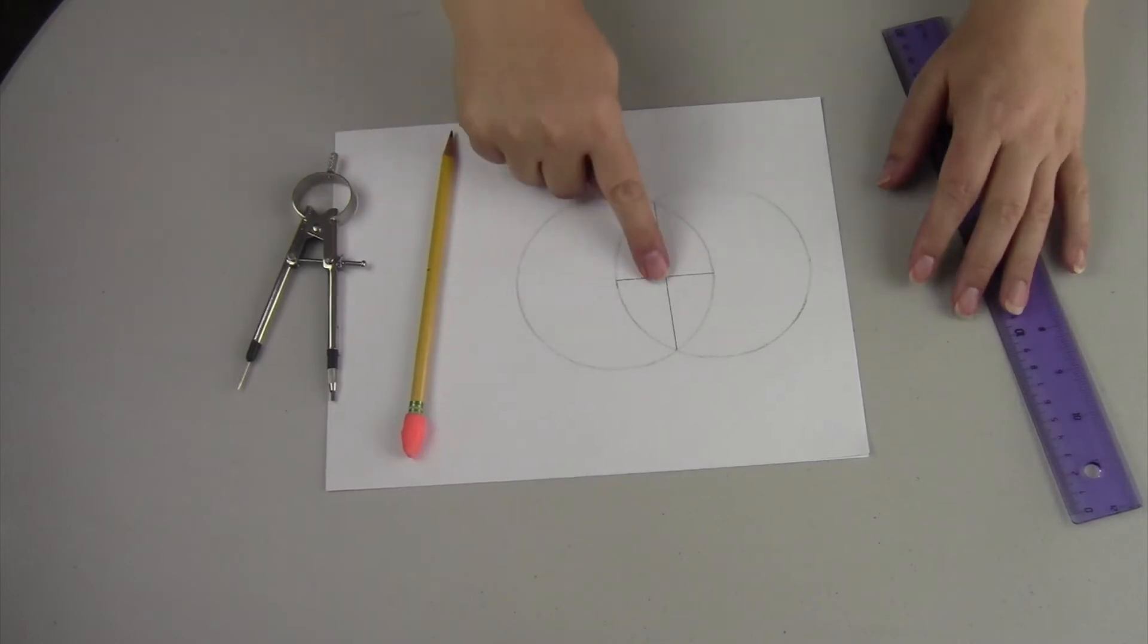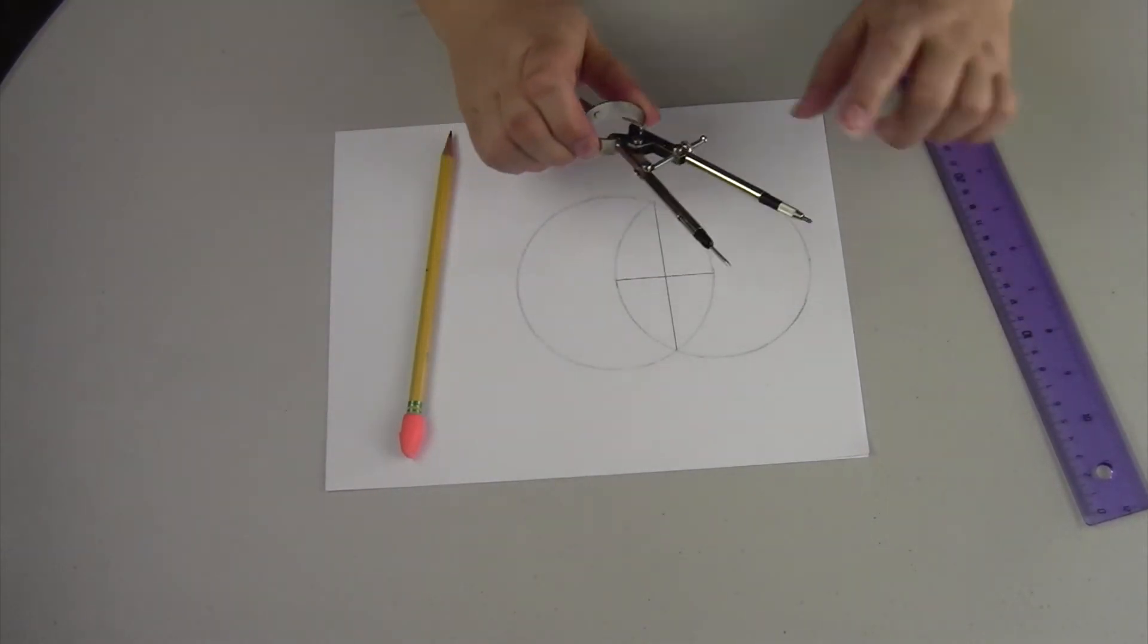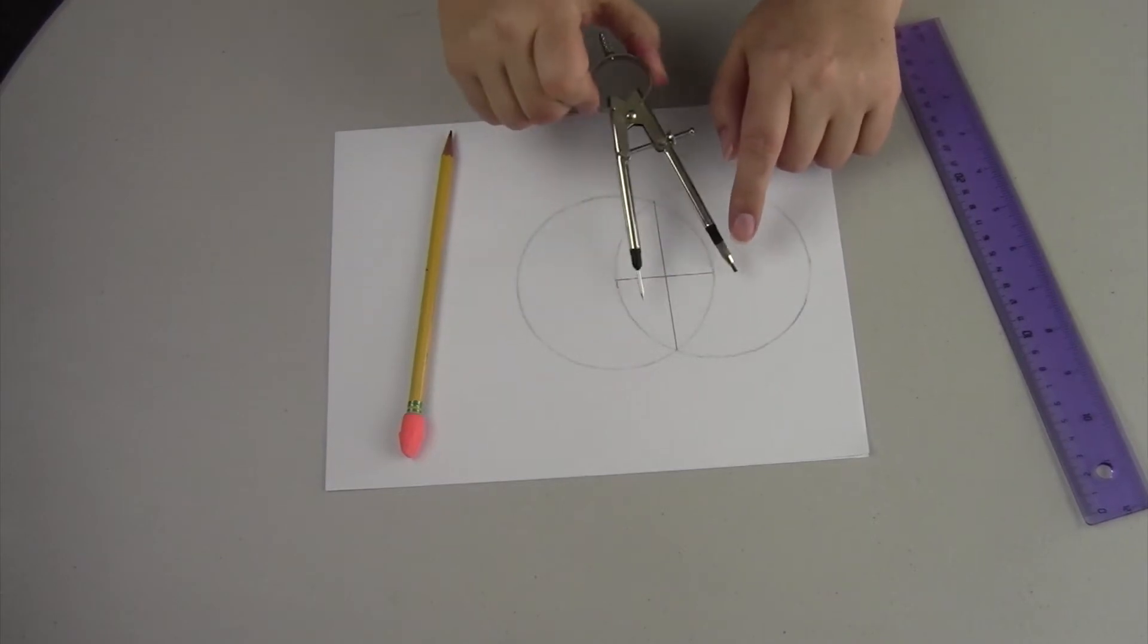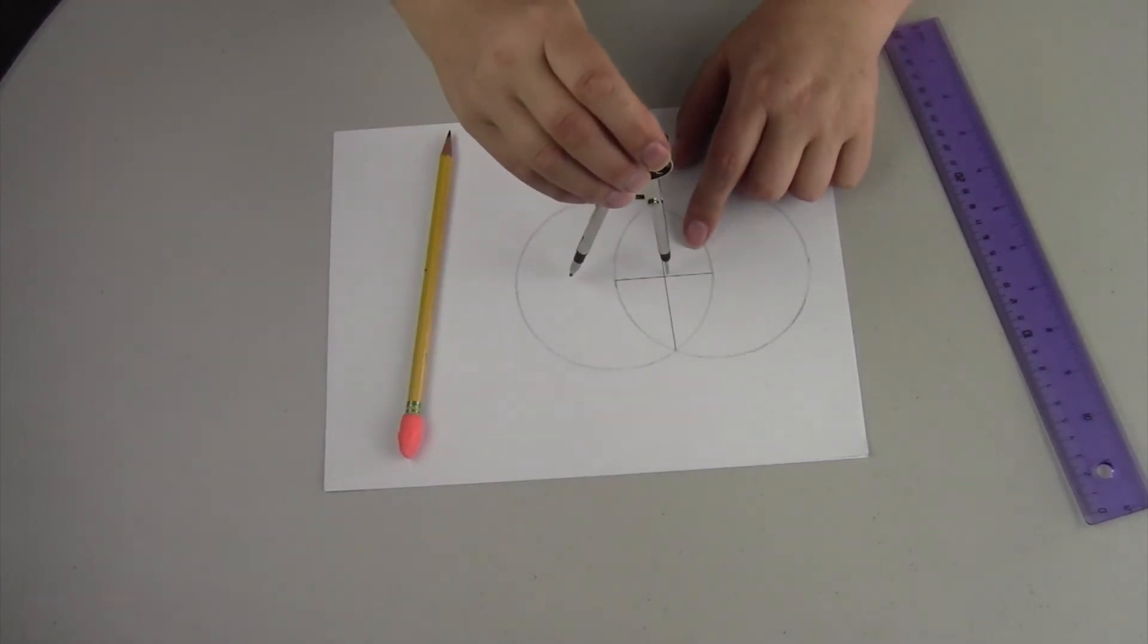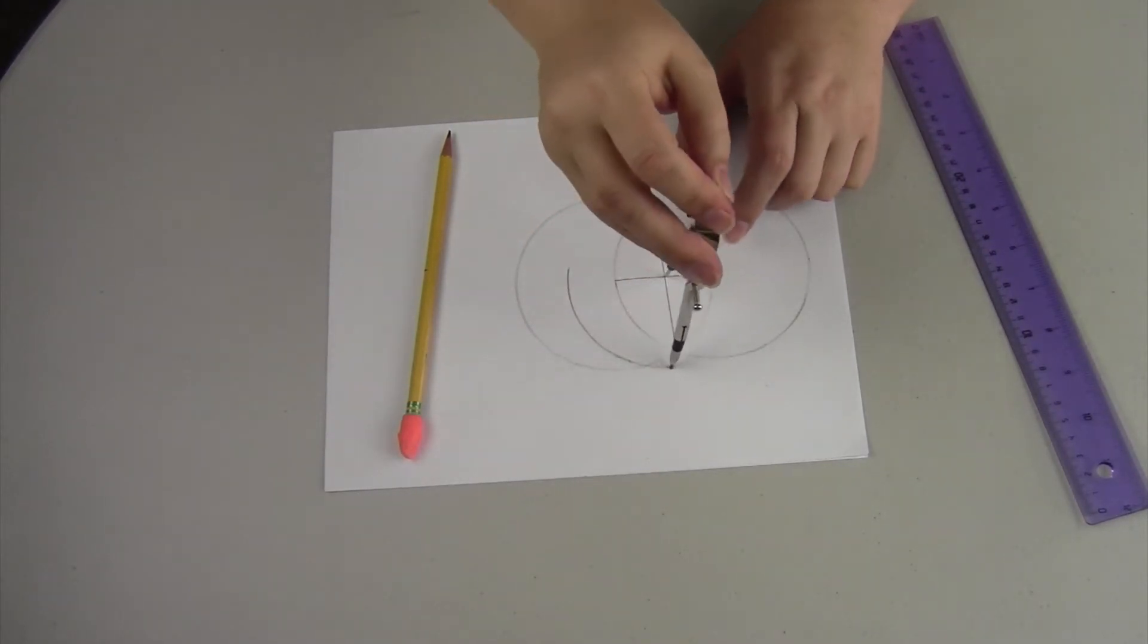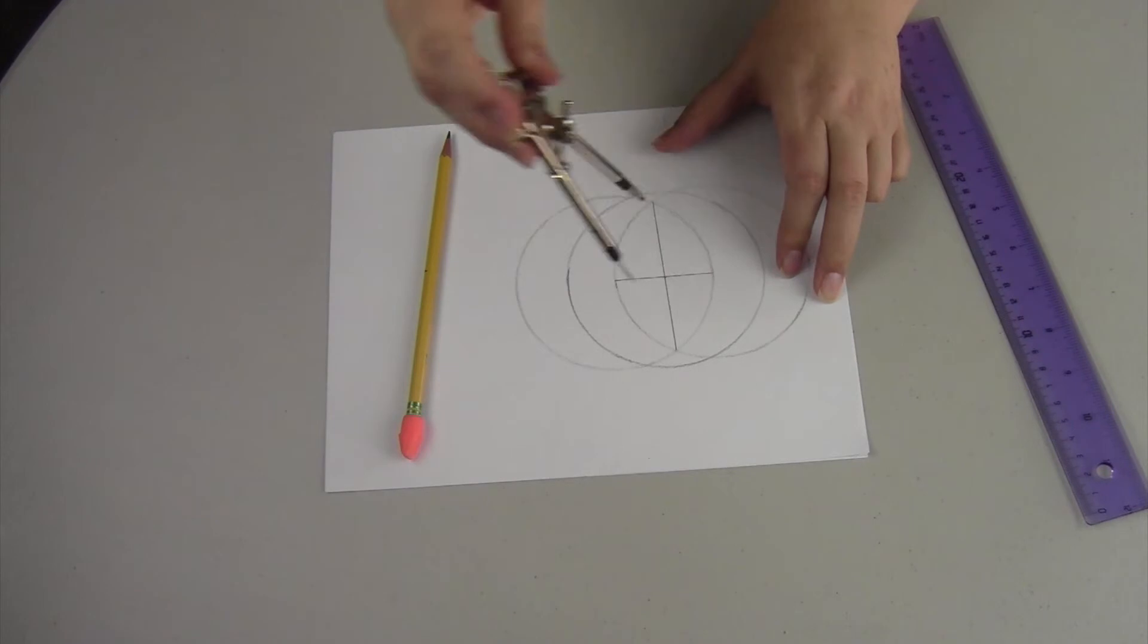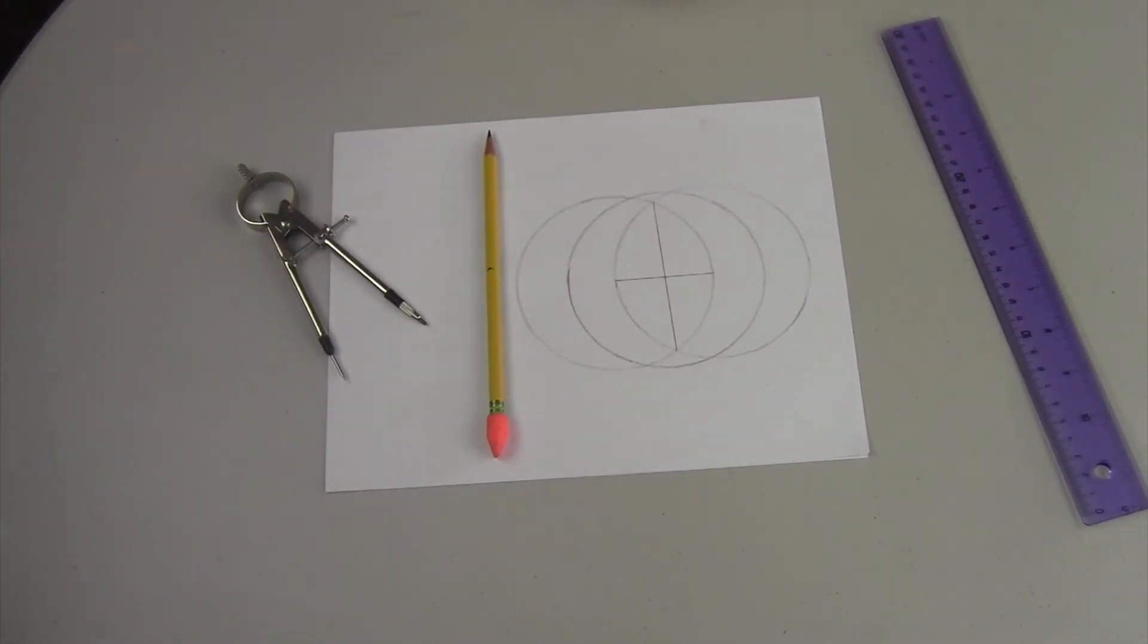And now we're going to create with this new point, we're going to use the same angle that we use to create these two circles to create a third circle within those two. Creating a third circle within the other two so it looks like this.